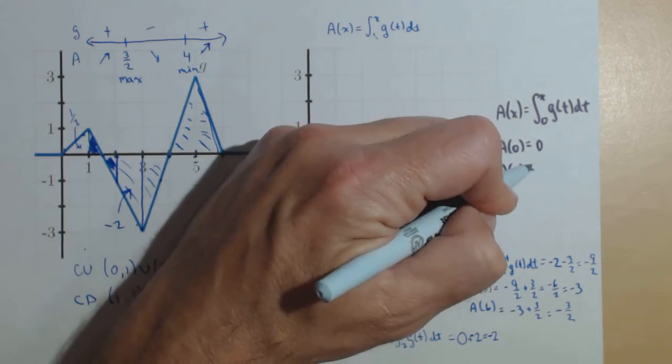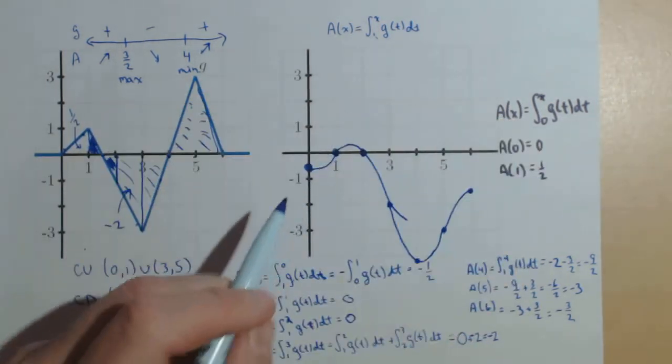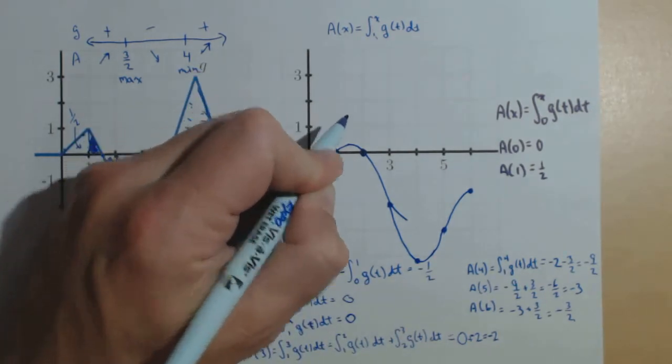Now, A of 1 is going to be the positive 1 half. And what we're going to see is that everything else follows. So, A of 0 will be 0, positive 1 half.